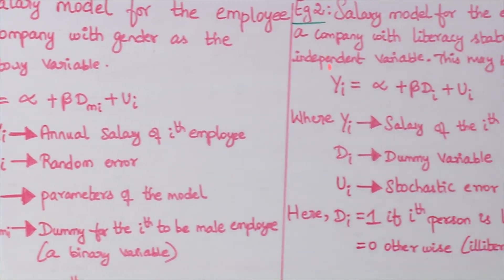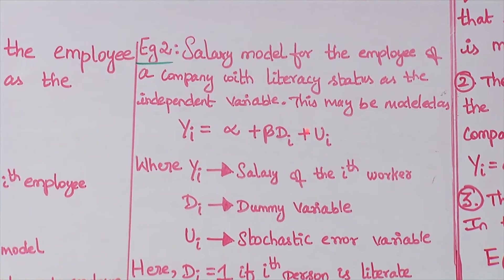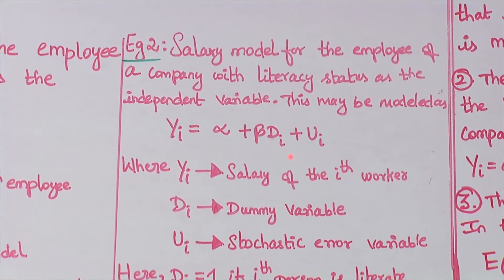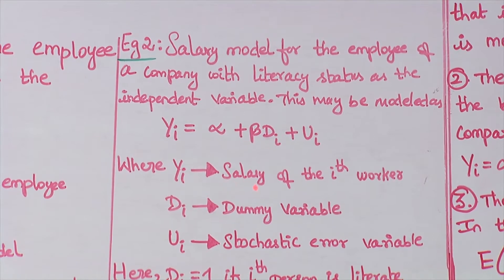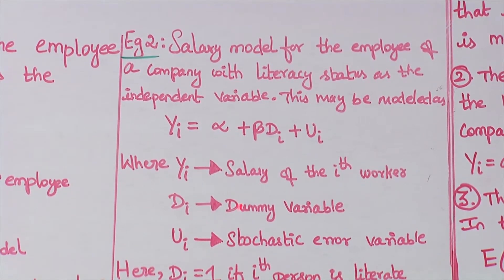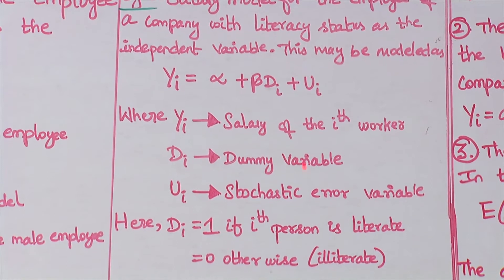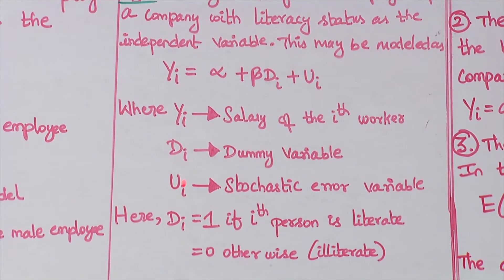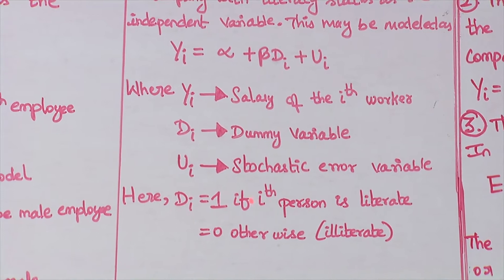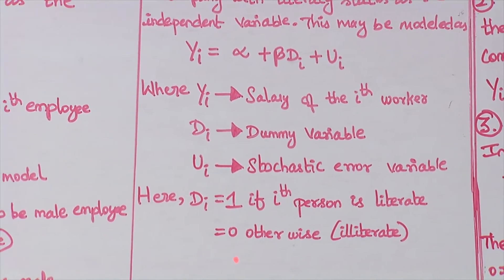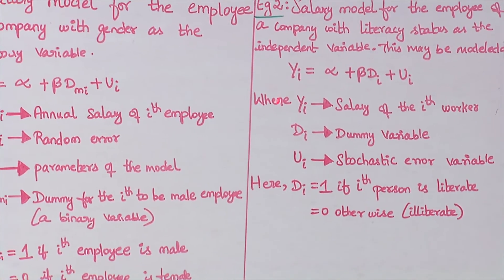Another example is a salary model for employees with literacy status as the independent variable. This model is specified as: y_i = α + β·d_i + u_i, where y_i is the salary of the i-th worker, d_i is the dummy variable for literacy status, and u_i is the stochastic variable. Here d_i = 1 if the i-th person is literate, and equals 0 otherwise. This is how the model is specified in ANOVA models.